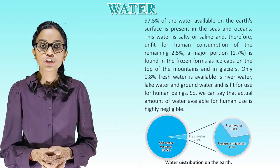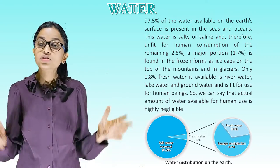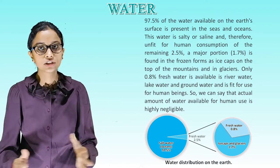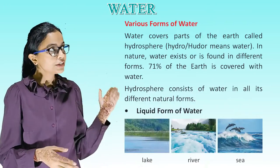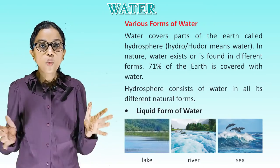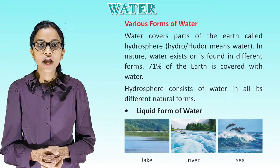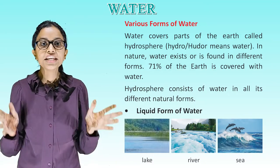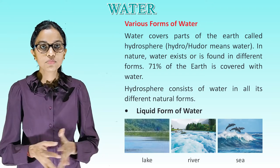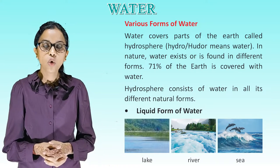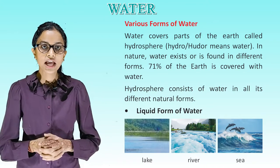Water distribution on the Earth. Children, are you able to see this chart? This chart is showing the water distribution on the Earth — how water is distributed. Various forms of water. Water covers part of the Earth called the hydrosphere. Hydro means water. In nature, water exists or is found in different forms. 71 percent of Earth is covered with water. The hydrosphere consists of water in all its different natural forms.